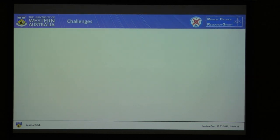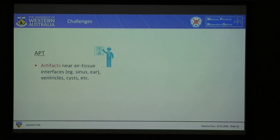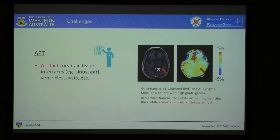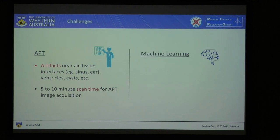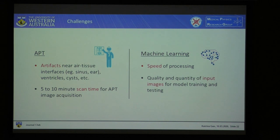Some challenges with APT and machine learning include: artifacts near air-tissue interfaces, ventricles, or cysts can show up as hyper-intense on APT images — as shown by a sinus-related artifact here — and this can be addressed by using APT in combination with conventional MRIs rather than APT alone. Secondly, APT scan time is quite long at about five to ten minutes, though methods are being researched to decrease this. With machine learning we also need fast processing times, which could be addressed using a supercomputer. We also need high-quality, high-quantity input images to train and test the model before it can be used in clinics.